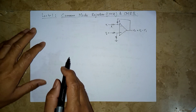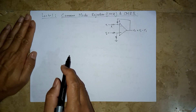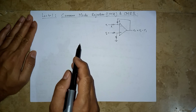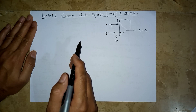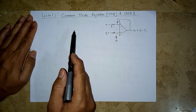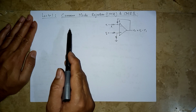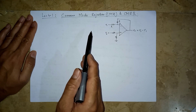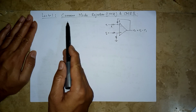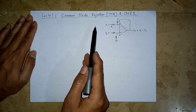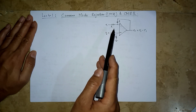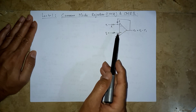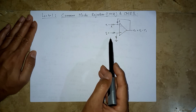There is a very important capability of an operational amplifier, and that is known as common mode rejection. Here we are going to learn about common mode rejection and the common mode rejection ratio.